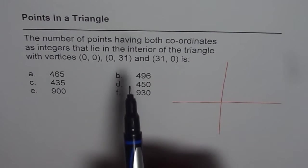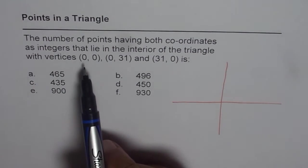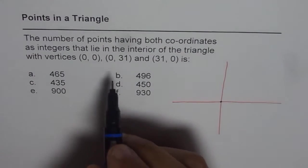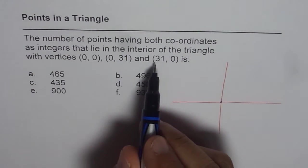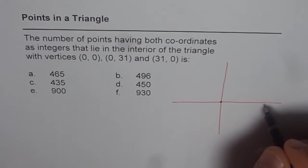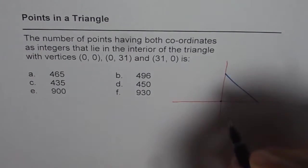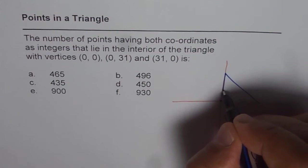Now when we say that the coordinates of the vertices are (0,0) that means that's the origin, and then we have (0,31) and (31,0). So that means x and y intercepts are 31. So what we can do is make a triangle. So that's the triangle we are talking about.